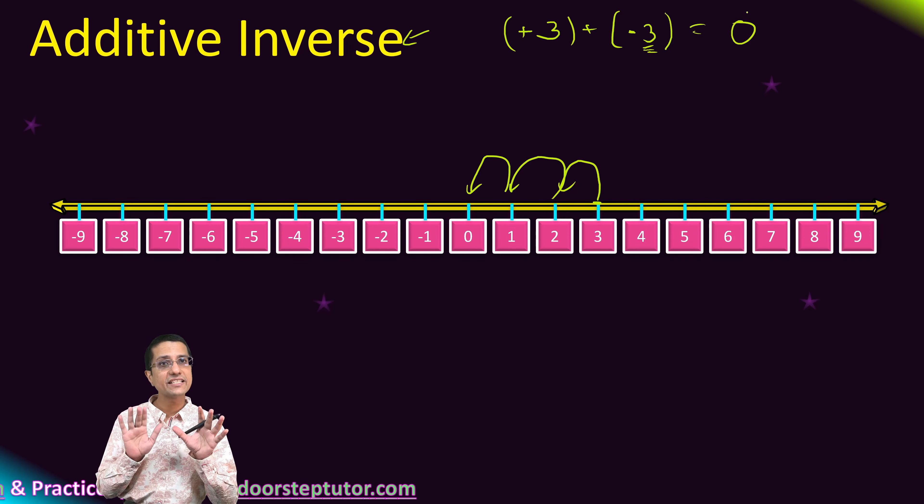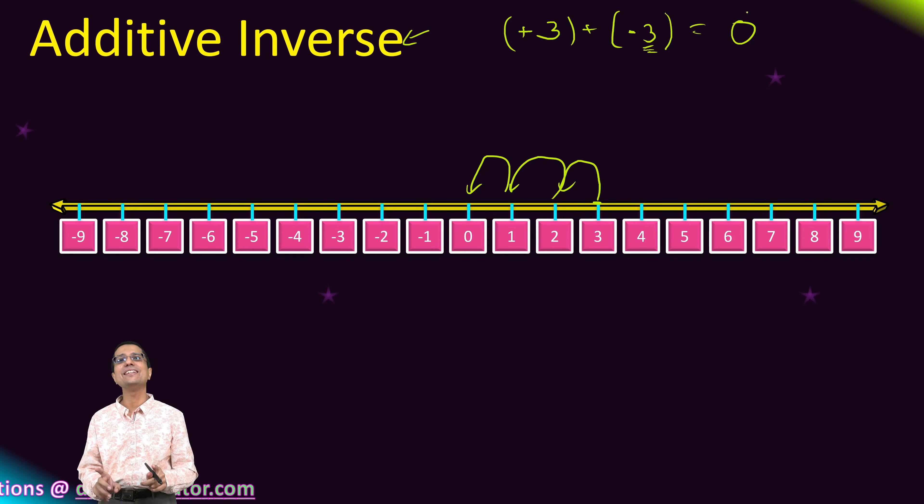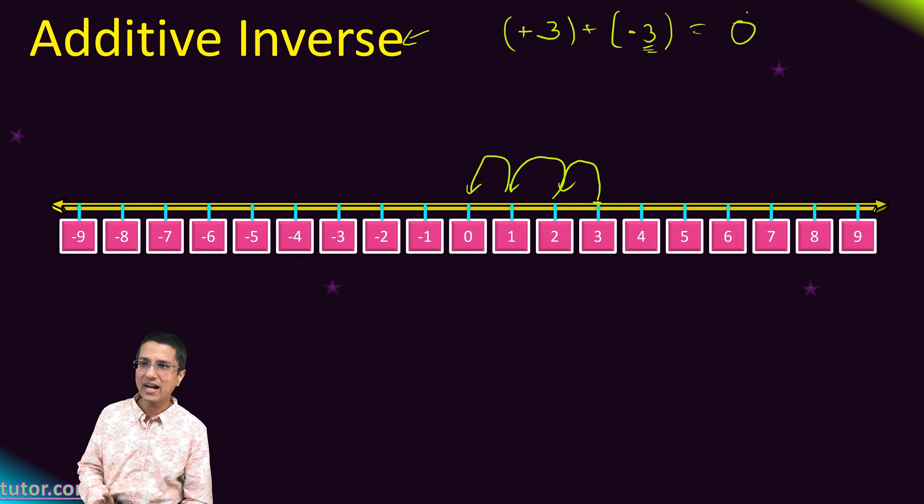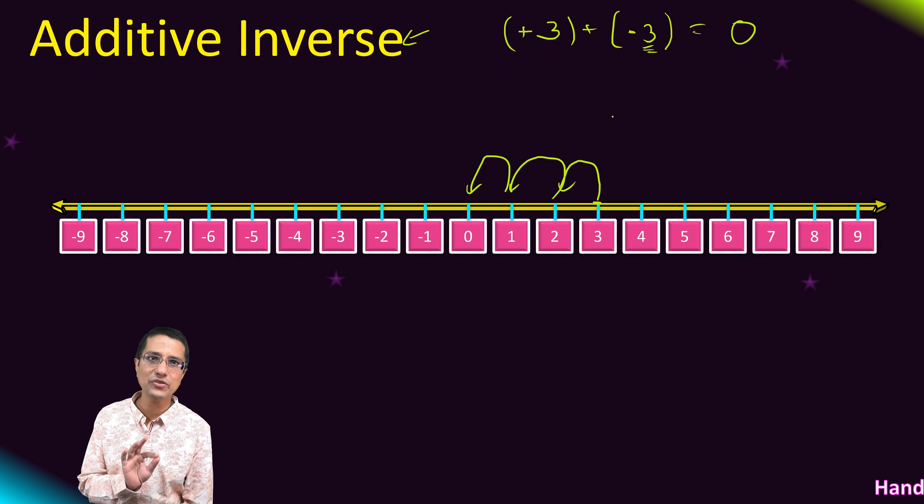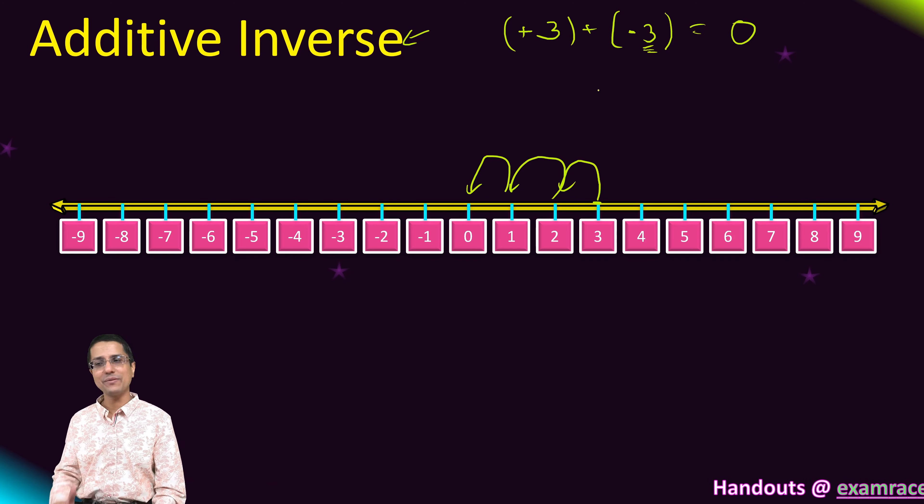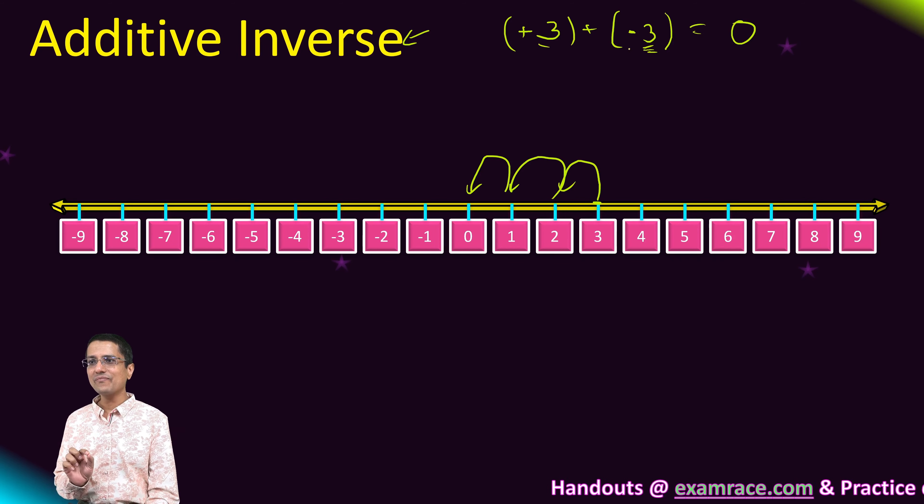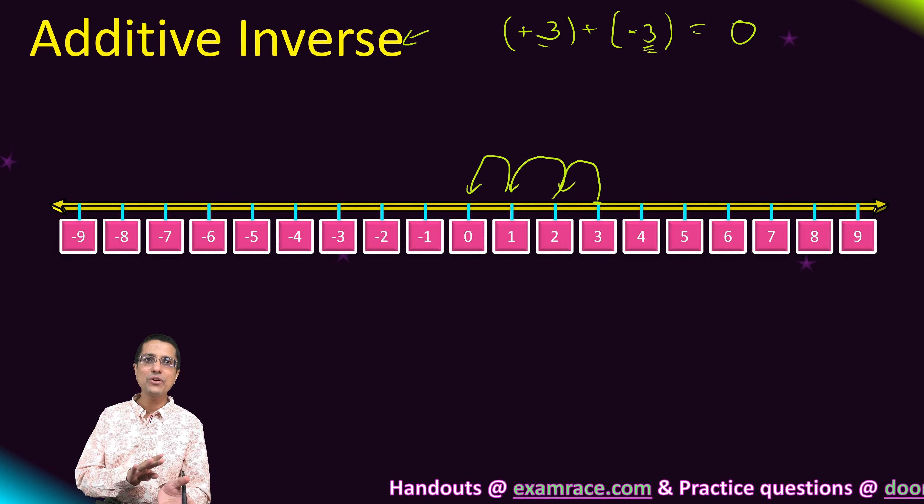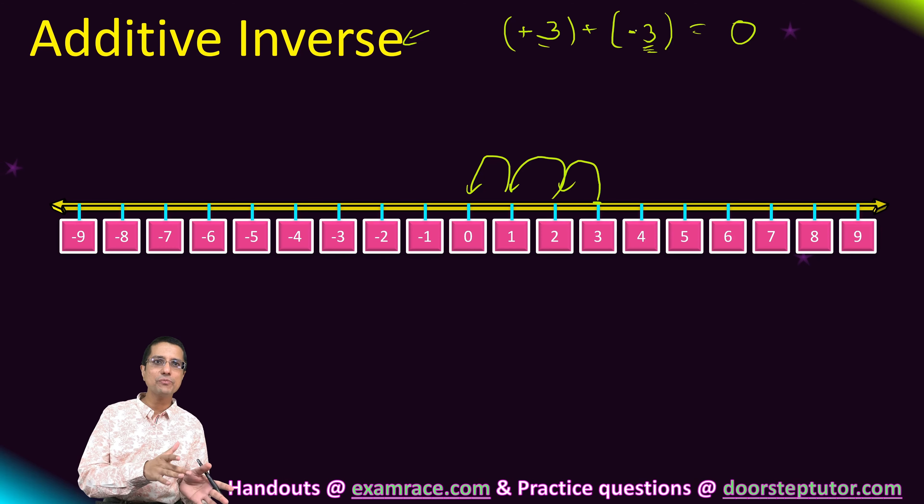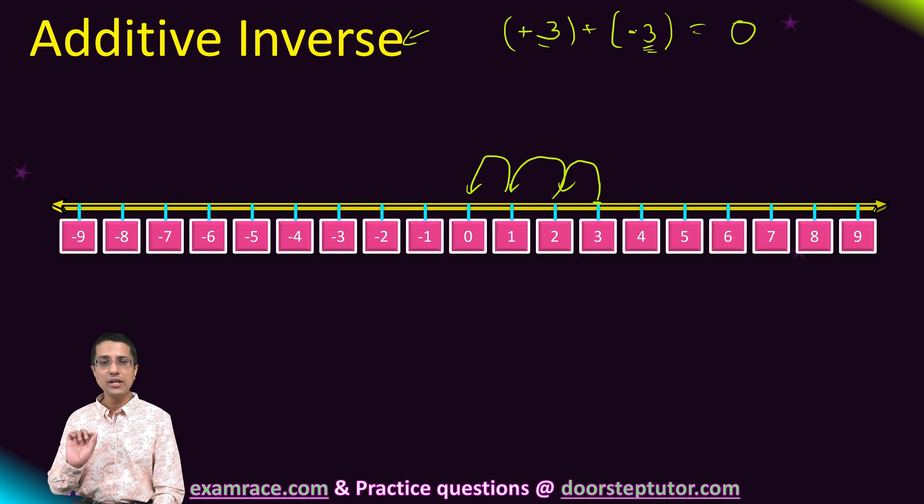Two integers such that their sum is equal to 0 are known as additive inverse of each other. Very simple, right? So this plus 3 and minus 3, they are additive inverse of each other. Plus 3 is the additive inverse of minus 3, and minus 3 is the additive inverse of plus 3.